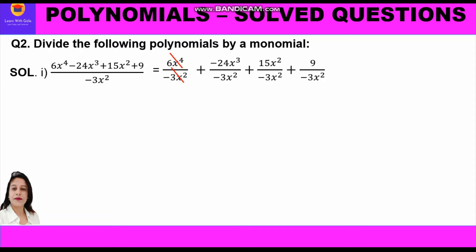Be careful about the minus sign in the denominator. For the first term, plus × minus = minus; 6/3 = 2 and x⁴/x² = x², giving -2x². For the second term, minus × minus = plus; 24/3 = 8 and x³/x² = x, giving +8x. For the third term, plus × minus = minus; 15/3 = 5 and x²/x² cancels, giving -5. For the last term, 9/3 = 3 but x² remains in denominator, giving -3/x². Final answer: -2x² + 8x - 5 - 3/x².